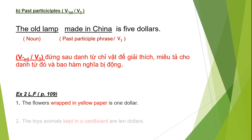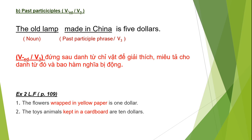Tiếp tục ví dụ thứ 2, cô sẽ tả những món đồ chơi con thú: 'the toy animals.' Trong sách người ta cho động từ là 'keep in', các bạn sẽ chuyển 'keep' về là 'kept' vì nó là cột số 3. Câu hoàn chỉnh: 'The toy animals kept in a basket are ten dollars' — những con thú được để trong cái giỏ thì giá 10 đô.